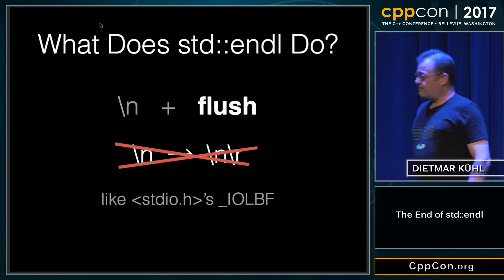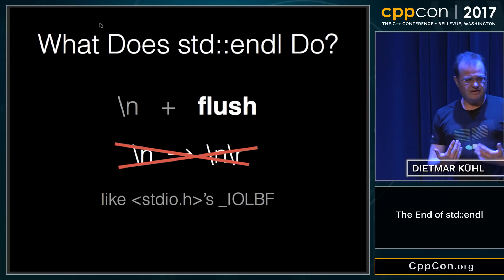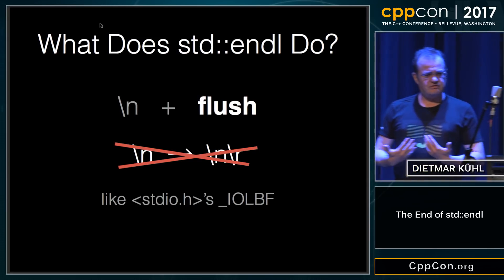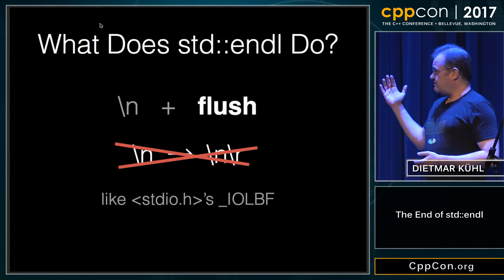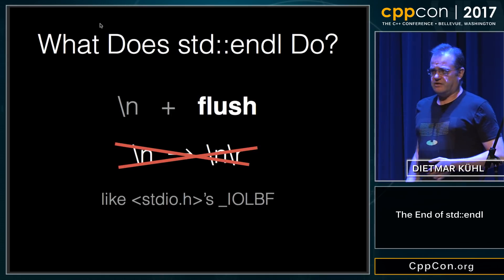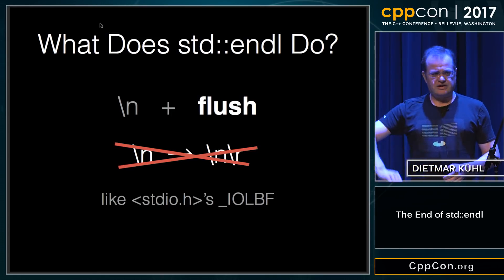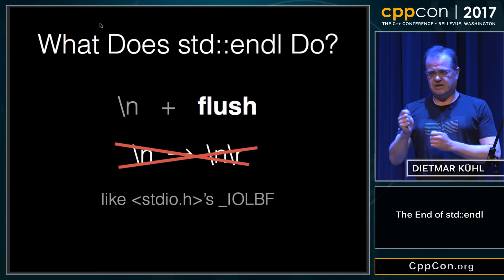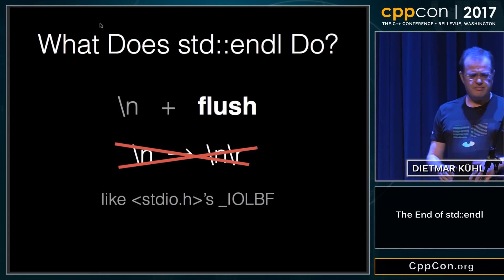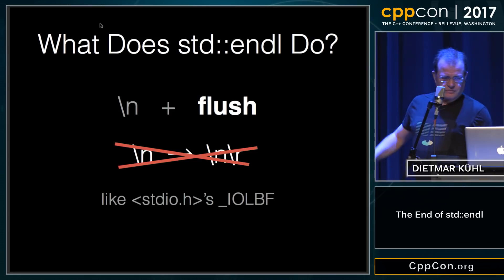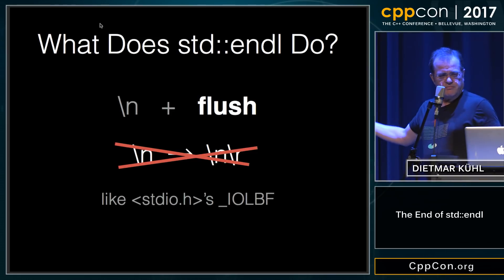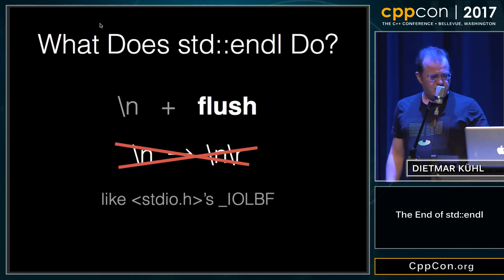That's actually basically the reason endl exists. It's mimicking the IO streams _IO_LBF setting, which you can set in the setvbuf stuff or something like that. But it does do a new line and a flush.